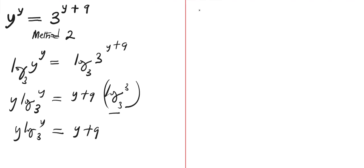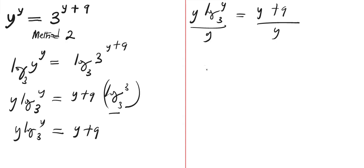Let's continue. We can divide both sides of the equation by y. We are going to have log of y to base 3 equals to 1 plus 9 over y. Right now the only way we can solve this is to eliminate this 1, and we do that by equating to a constant with the same base.